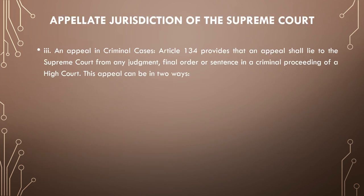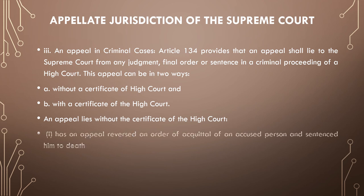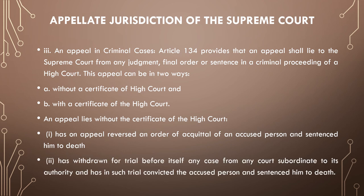The third type of appeal is an appeal in criminal cases. Article 134 provides that an appeal shall lie to the Supreme Court from any judgment, final order, or sentence in a criminal proceeding of a high court. This appeal can be of two types: first, without a certificate of the high court, and second, with a certificate of the high court. An appeal lies without the certificate of the high court if it has reversed an order of acquittal of an accused person and sentenced him to death, or if it has withdrawn a case from a subordinate court and in such trial convicted the accused person and sentenced him to death.